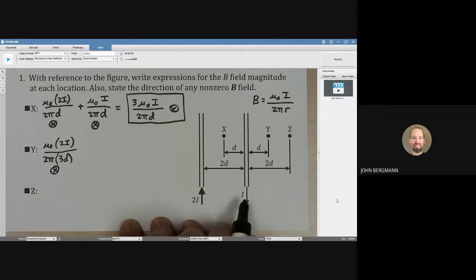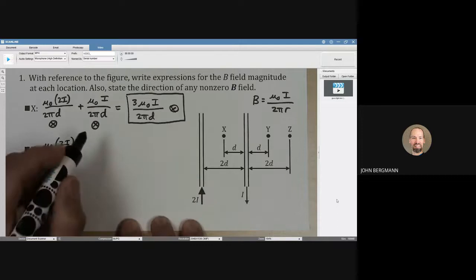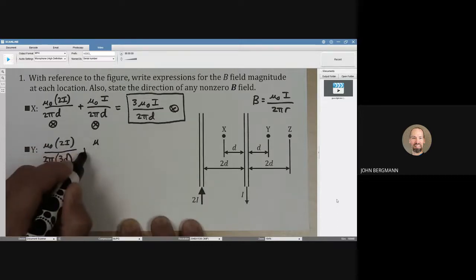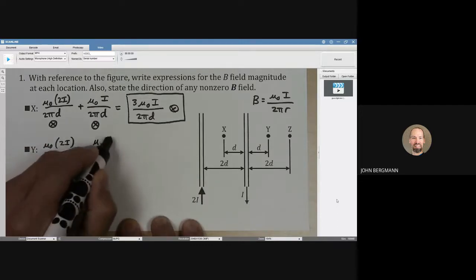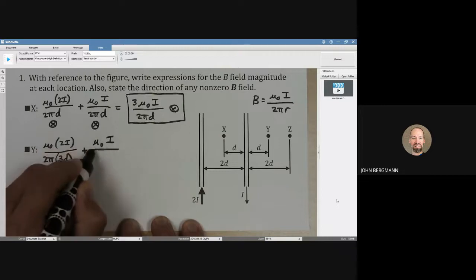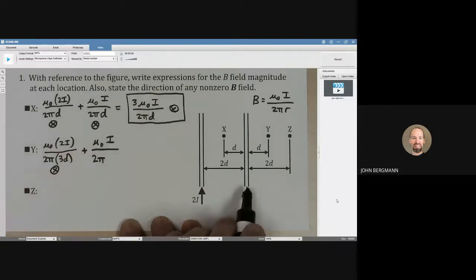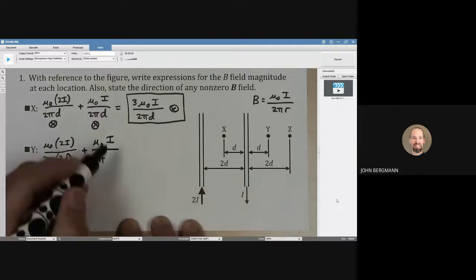And in what direction is that magnetic field contribution? That is into the page. Now we consider the other contribution from this other wire. So that's going to be μ₀ times that current, which is i, divided by 2π. And how far away is that wire from point y? It's only d away.